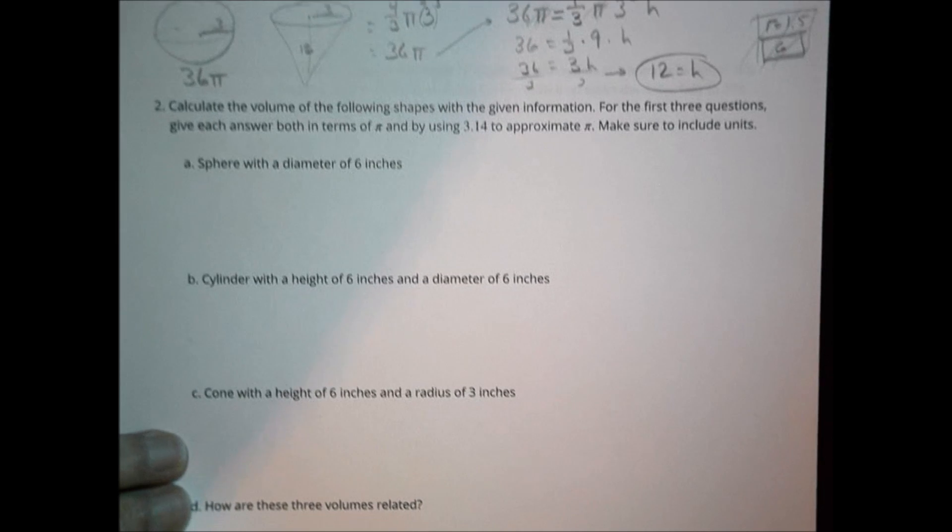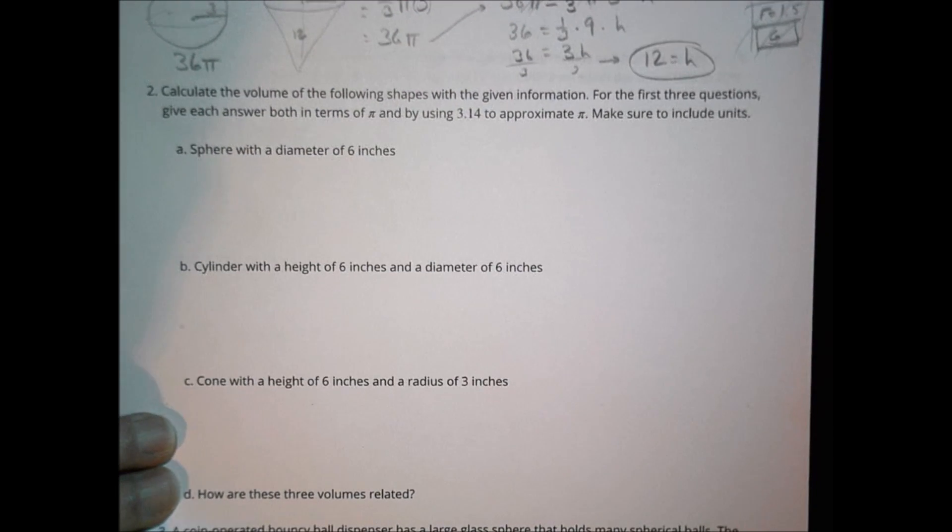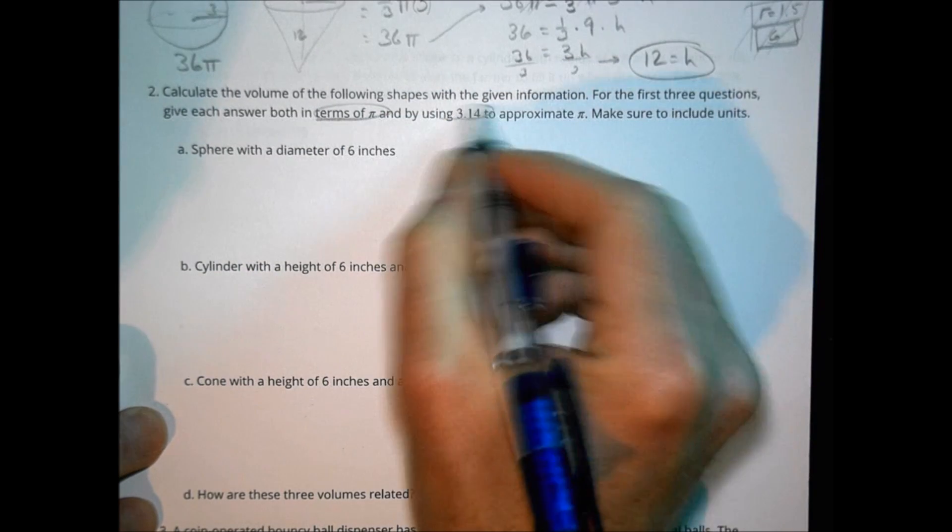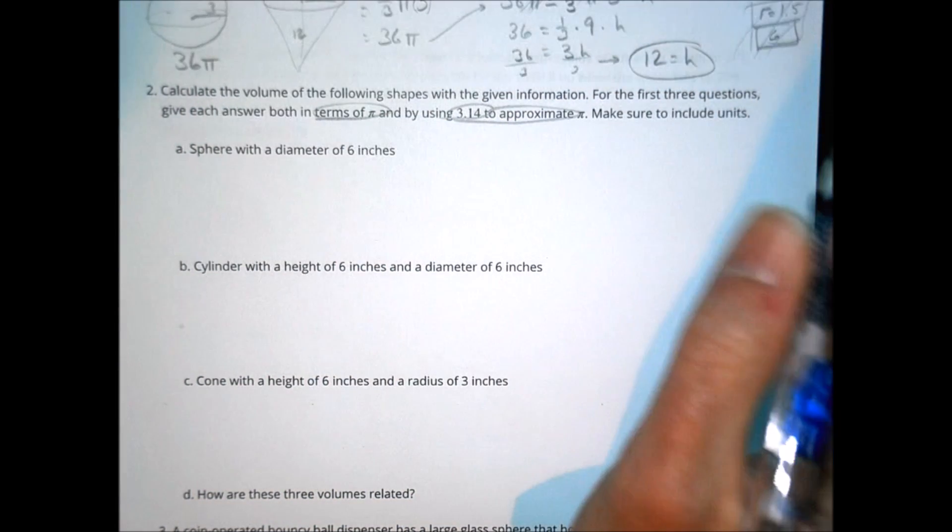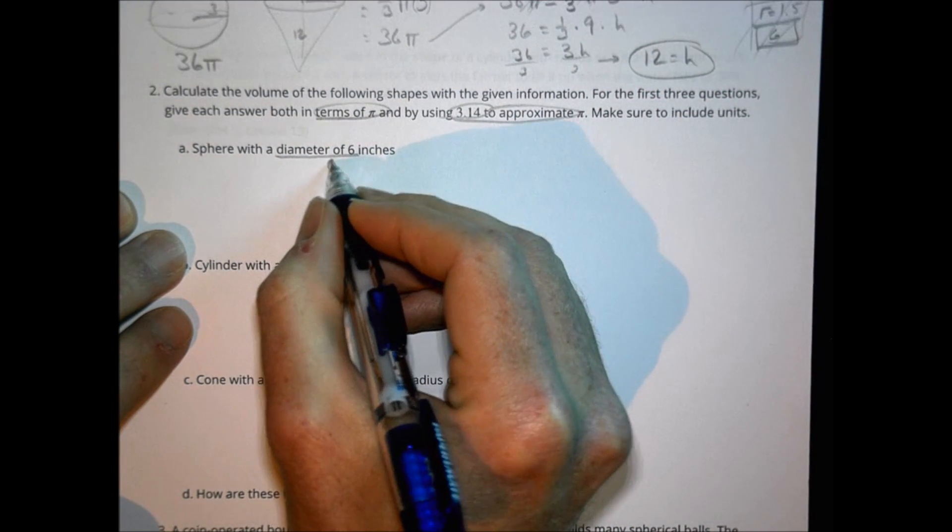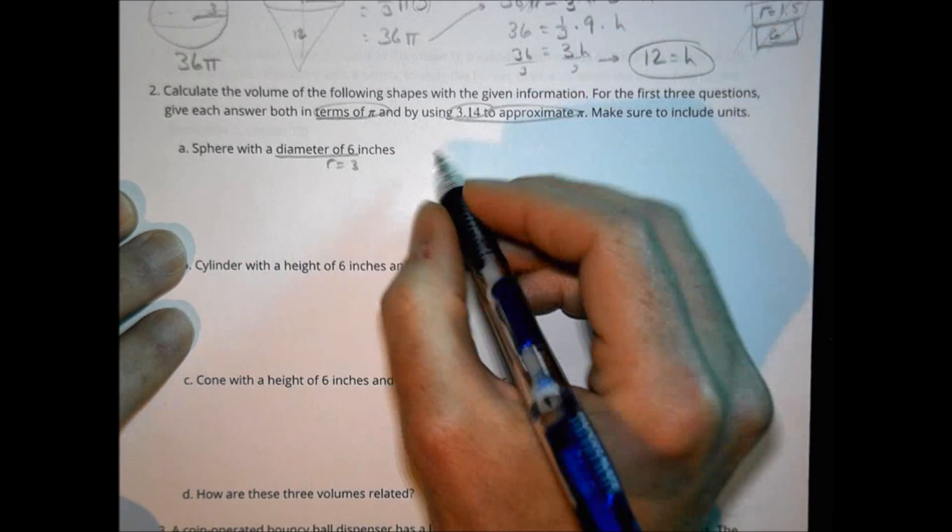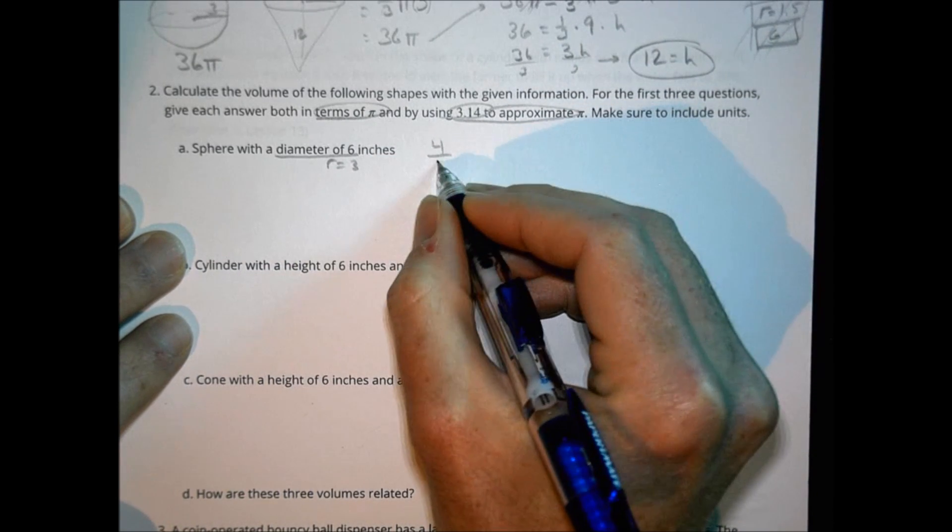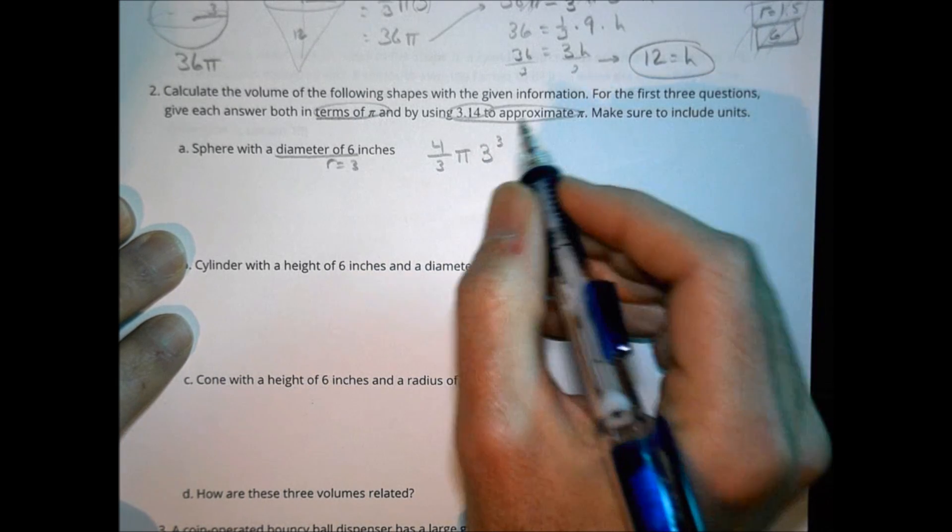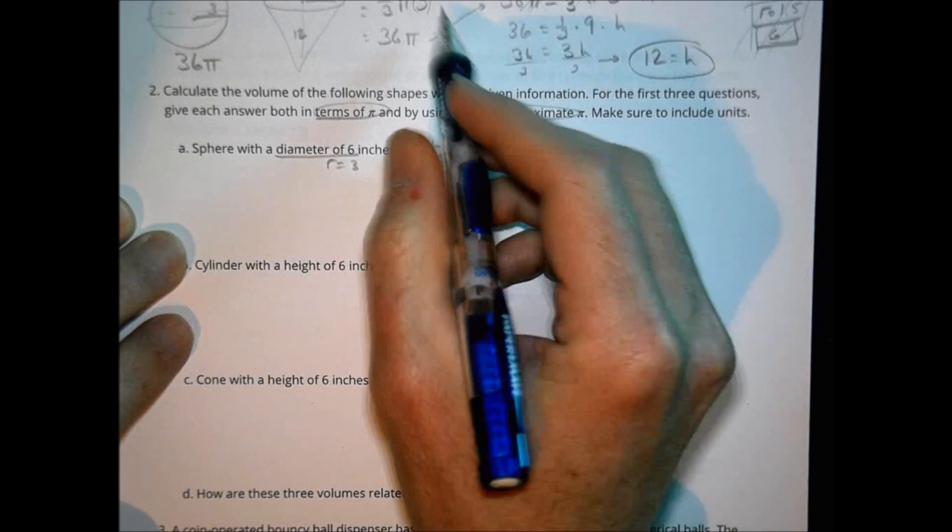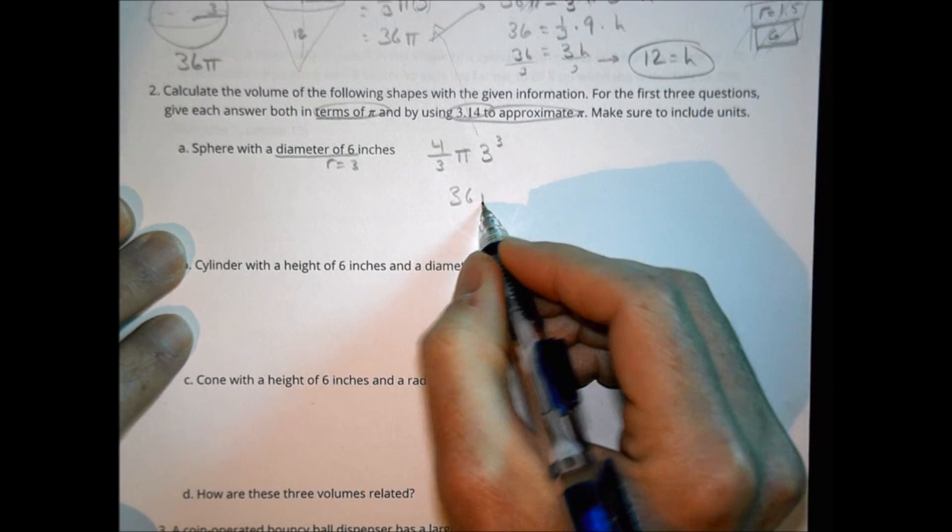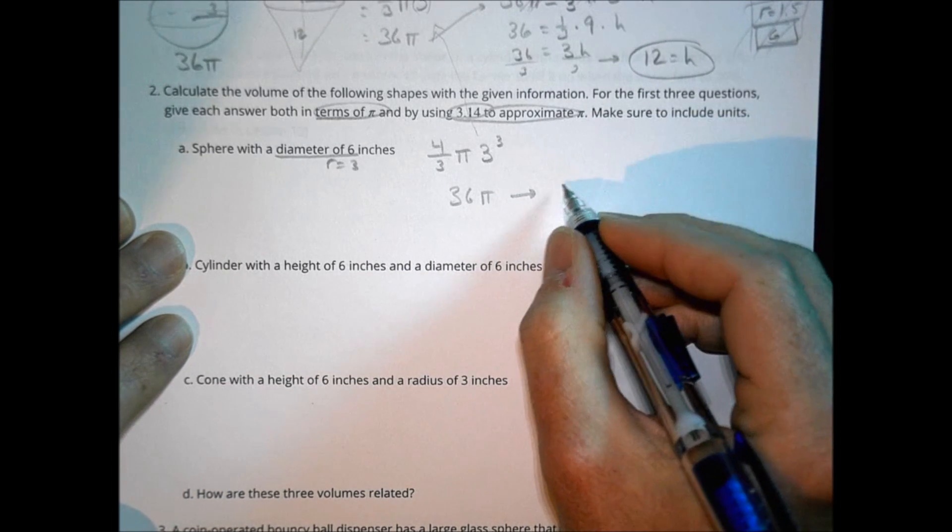Number two. Calculate the volume of the following shapes. Again, from information, we're going to do it both in terms of pi and then approximate pi with 3.14. So just kind of plugging things in. Here we have a diameter of six, which means our radius equals three for the sphere. So we're going to plug four thirds times pi times the radius cubed. Four thirds pi times three cubed. Well, look right there. We just did that one. There it is right there. It's 36 pi.